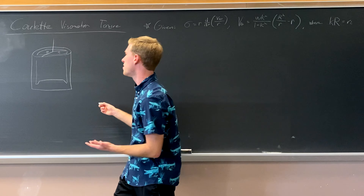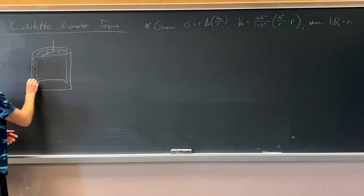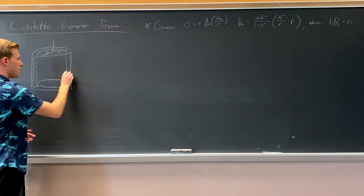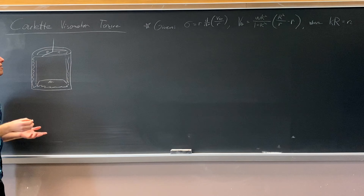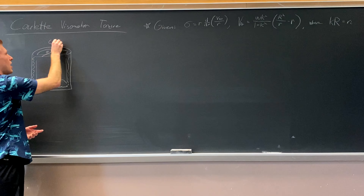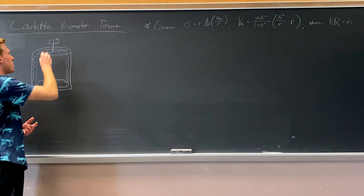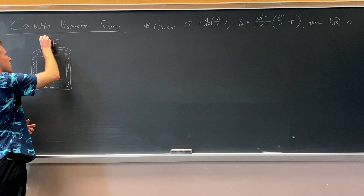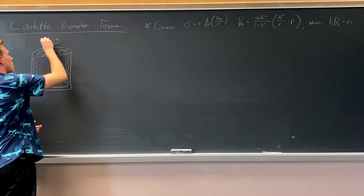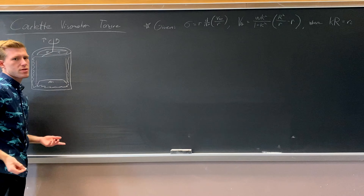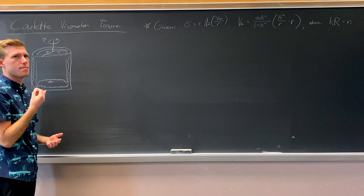So anyway, this is our viscometer, and in it we have a bunch of liquid in the air pocket right there, and here's air. What's going to happen is our motor up top is going to apply a torque to the inner cylinder — which we'll call tau, a fancy T for torque — and that torque is going to be exerted on the inner cylinder, and it's going to spin.